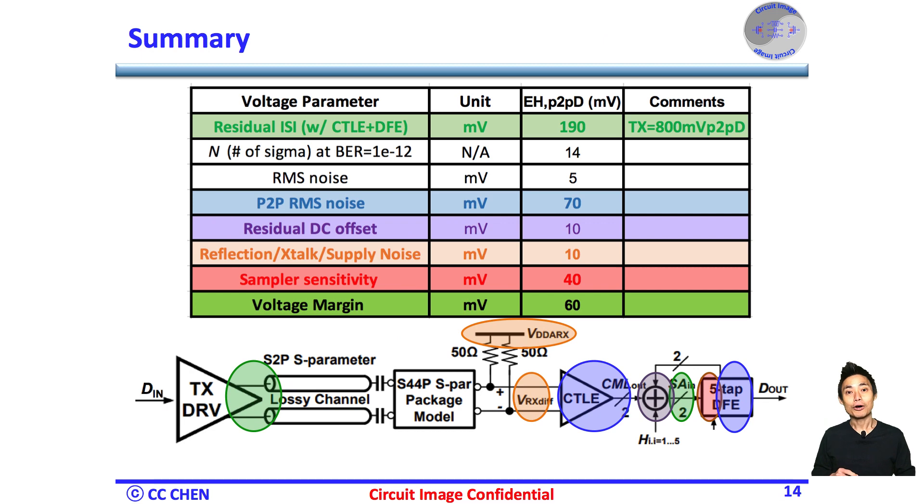Here is a summarized image of why we need to have a link budget in a SerDes system. We start with the eye height margin evaluation, and we will discuss the eye width margin next time.